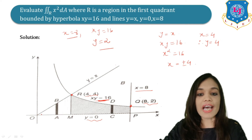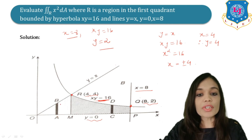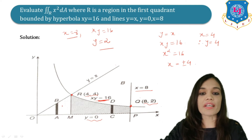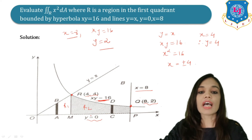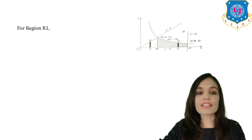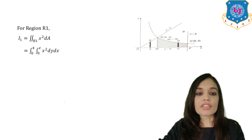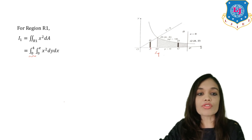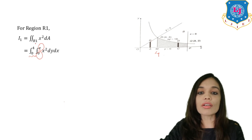Consider the first region R1 as triangle O, M, R. Here the vertical strip AB is between two lines. For region R2 (quadrilateral MRQP), the vertical strip goes from the line to the parabola. Now for region R1, the limits of x are from 0 to 4, and the limits of y, considering the vertical strip, are from 0 to x.